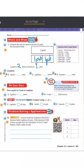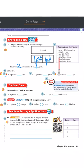Number two: two pints is the same as how many cups? Looking at the conversion chart — how many cups are in a pint? A pint has two cups. So if I have two pints, I'm going to have four cups.